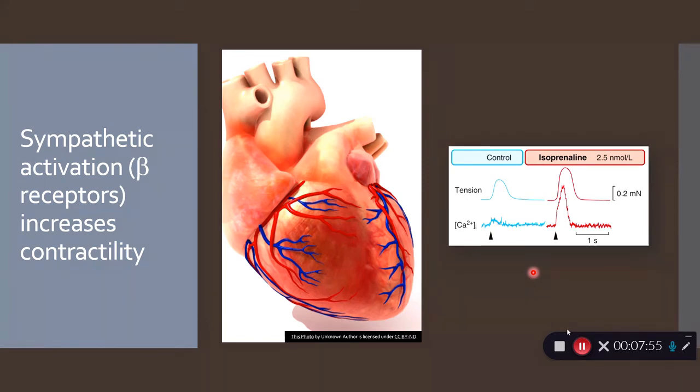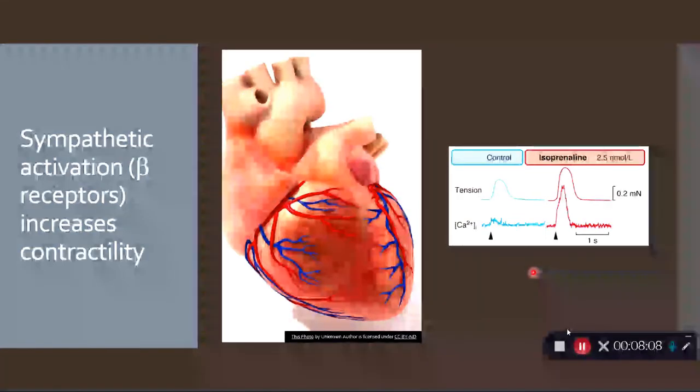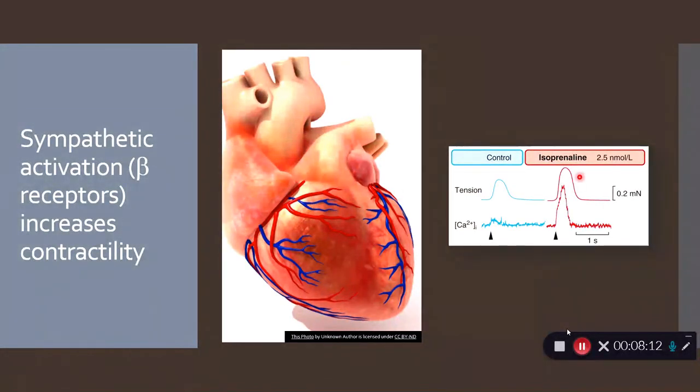We want to stop this from happening because if the heart's demand for oxygen is higher than the supply of oxygen, then you can decrease the demand by getting the heart to work less. Given that adrenaline makes the heart work more, we want to block this response. So we want to block beta receptors.